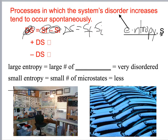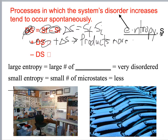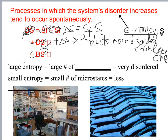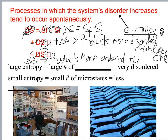If I have a positive delta S, then my products are more disordered than the reactants. If I have a negative delta S, then my products are more ordered than the reactants.